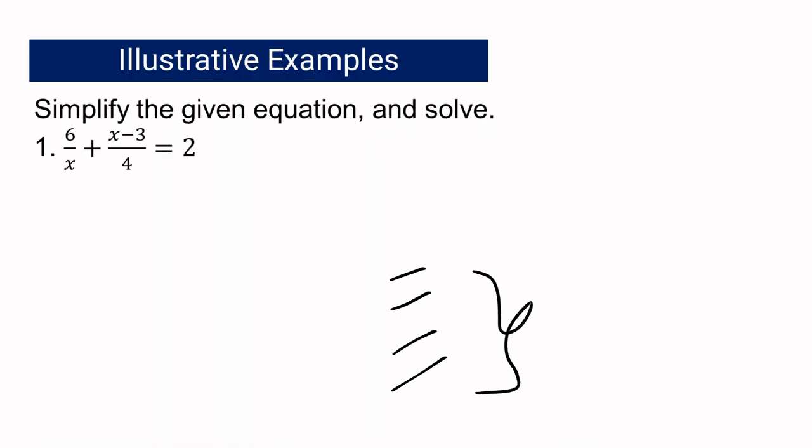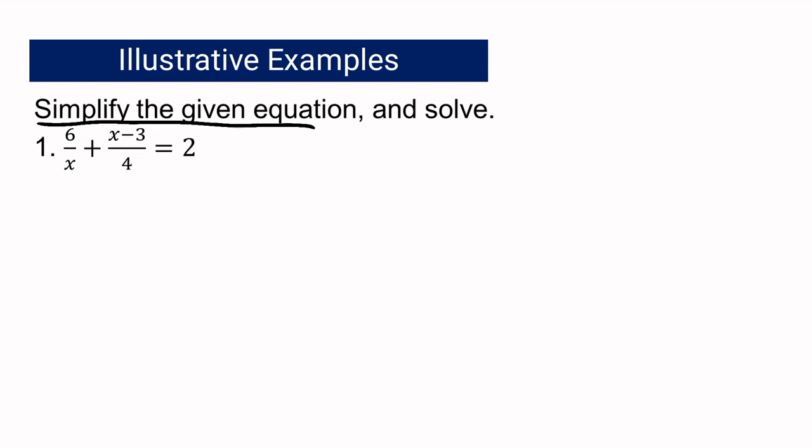Let's have example number one. We have the equation: 6 over X plus (X minus 3) all over 4 equals 2. You are going to notice that we have a rational algebraic equation. What you will do is simplify the given equation and then solve the resulting equation. To simplify, you have to determine the LCD first. In our example, our LCD is 4X.